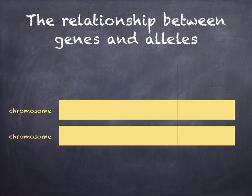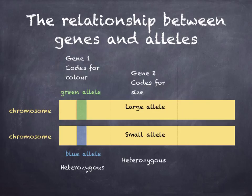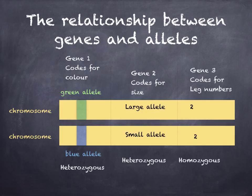Looking at the relationship between genes and alleles: gene one encodes for color, so a green allele and a blue allele — because they're different, it will be heterozygous. A large allele and a small allele will also be heterozygous. And if the alleles are the same, for example two and two for the number of legs, we say that it's homozygous.